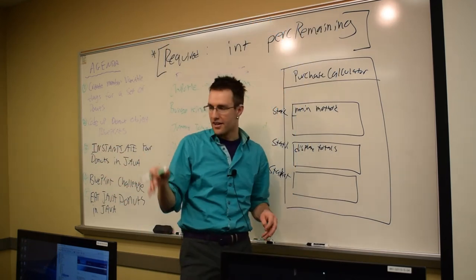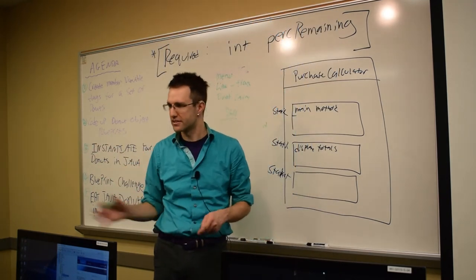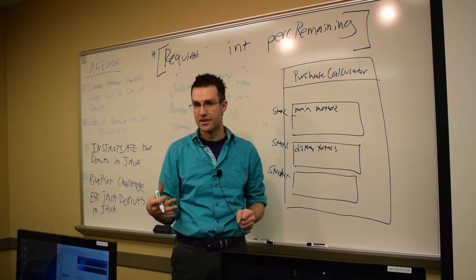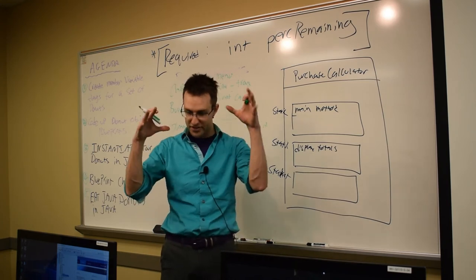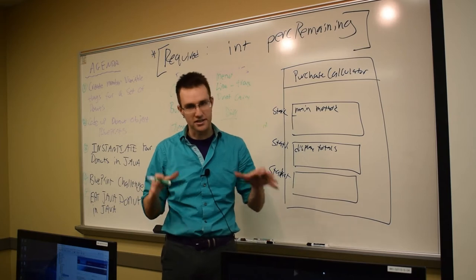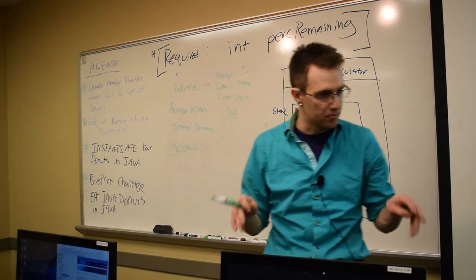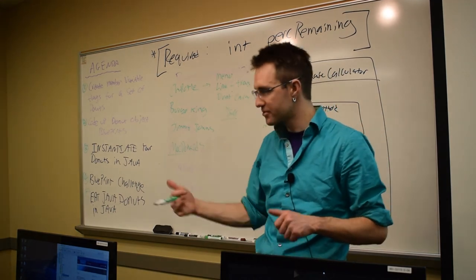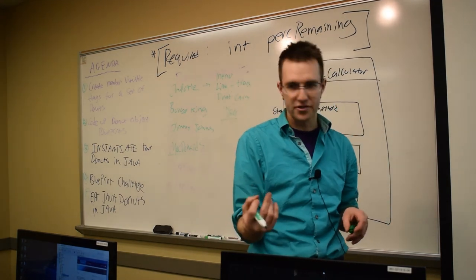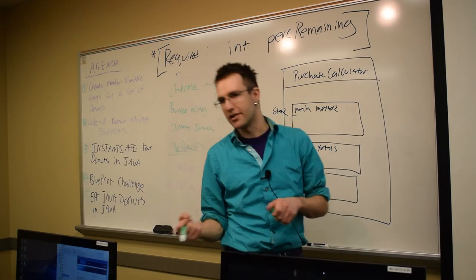Every Chipotle restaurant has some table configurations. Some of them have more tables than others. In other words, there exists a Chipotle blueprint that is used to construct each restaurant. We are going to make a blueprint that we will use to construct every virtual Java donut in our compiler.